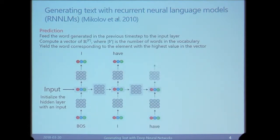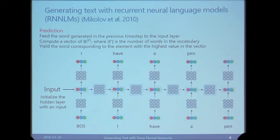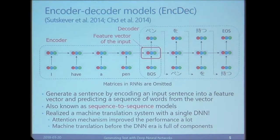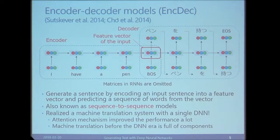We repeat this process until we hit an end-of-sentence token. The encoder-decoder model initializes the hidden state of the neural language model with a feature vector composed from the input sequence. The architecture can generate a sentence by encoding an input sentence into a vector and then making predictions for the output sentence. It is also called a sequence-to-sequence model. Another innovation called the attention mechanism further improves the performance of the encoder-decoder architecture. Notably, statistical machine translation with a history of over 20 years is being replaced by DNN-based approaches with a history of less than five years.